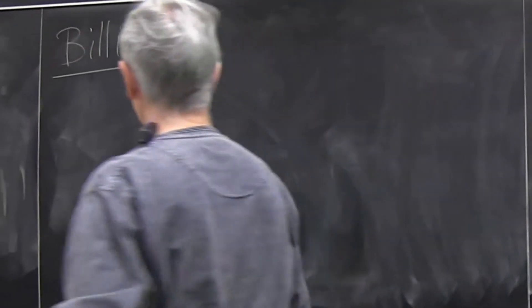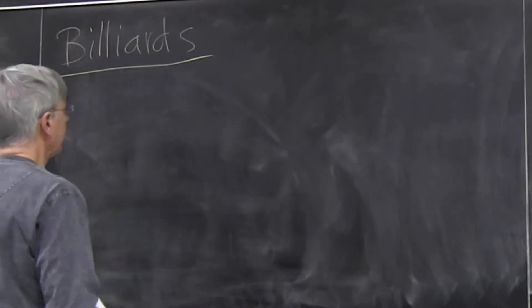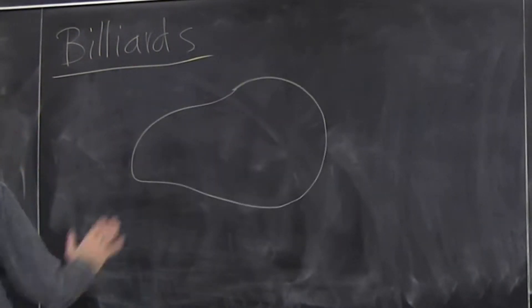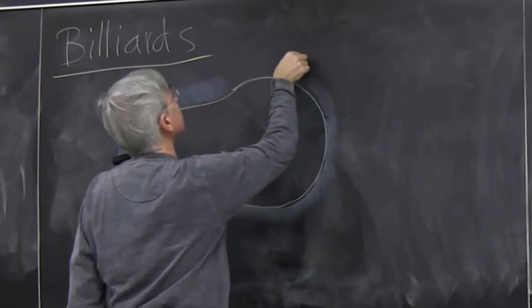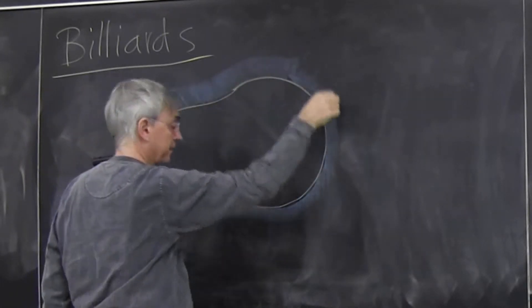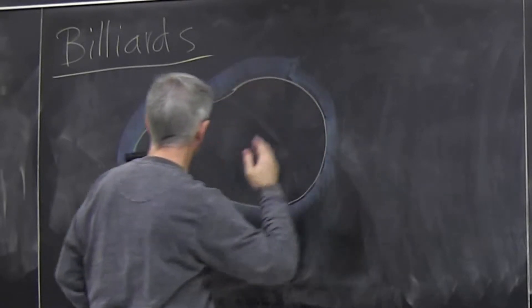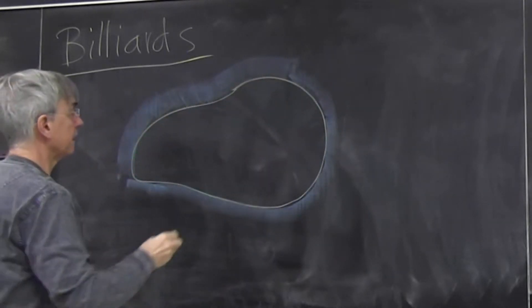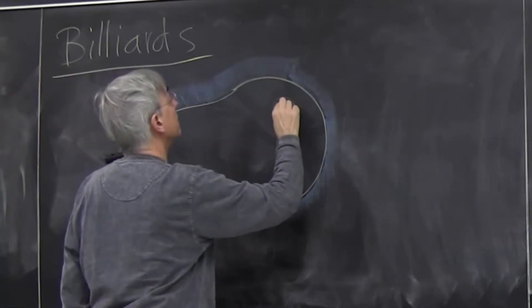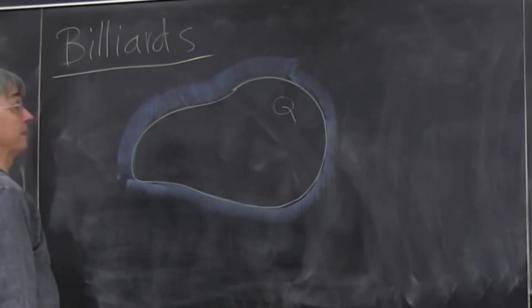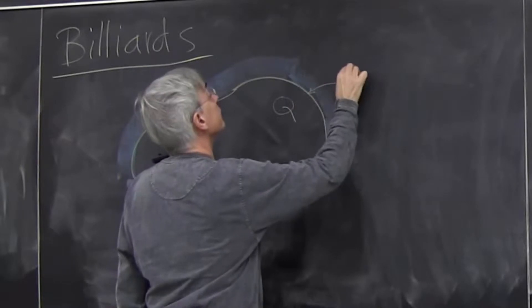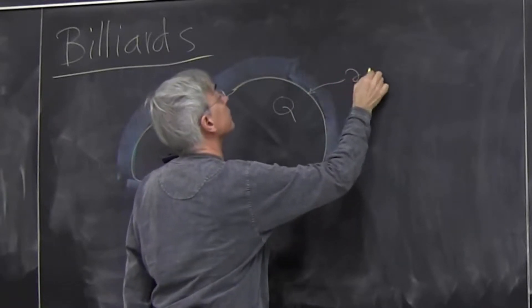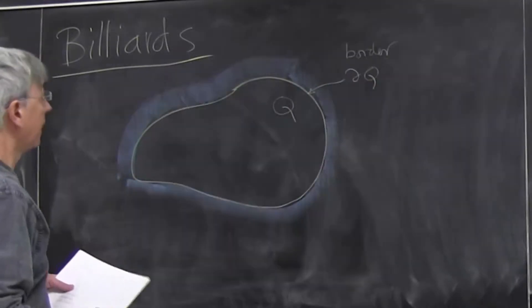They capture the essence of thermodynamics. So what's the billiard? Suppose we have a plane like the plane on this board and we cannot penetrate this wall. Outside the wall we cannot go. There is a domain Q which is the billiard, there is the border of the billiard which is conventionally written as partial Q.